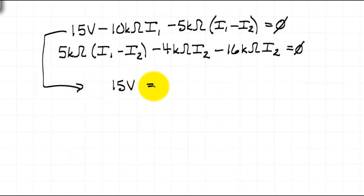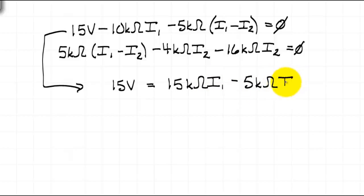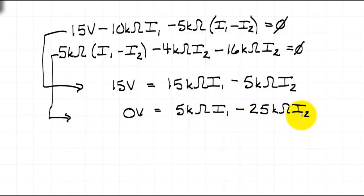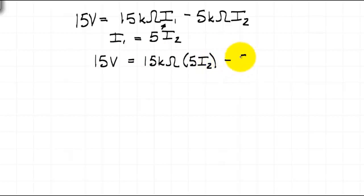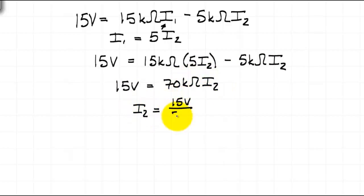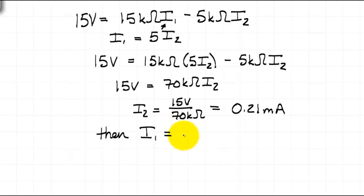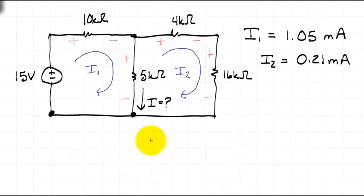We now have the equations which describe the circuit. Simplified, the first equation gives 15V equals 15kΩ·I1 minus 5kΩ·I2, and the second equation gives 0V equals 5kΩ·I1 minus 25kΩ·I2, which simplifies to I1 equals 5 times I2. Substituting into the first equation, 15V equals 15kΩ times 5·I2 minus 5kΩ·I2, reducing to 15V equals 70kΩ·I2. So I2 equals 0.21mA and I1 equals 1.05mA. The current I we are looking for equals I1 minus I2, resulting in 0.84mA.